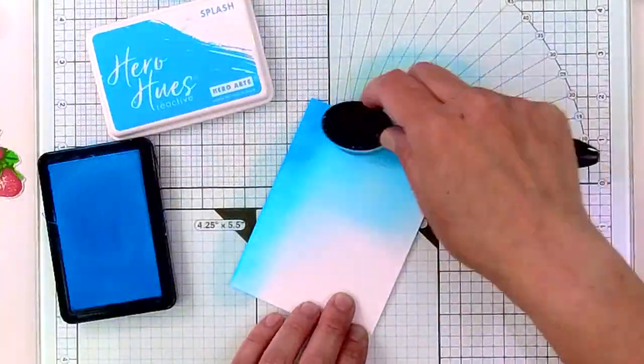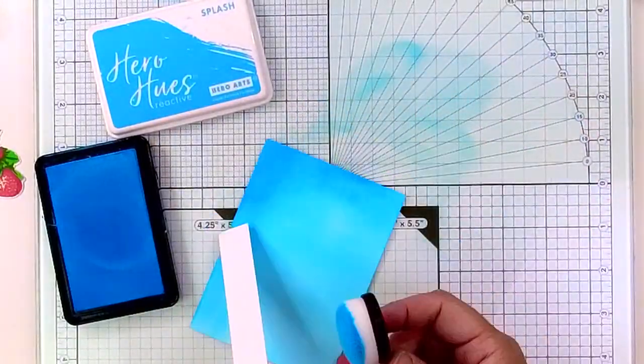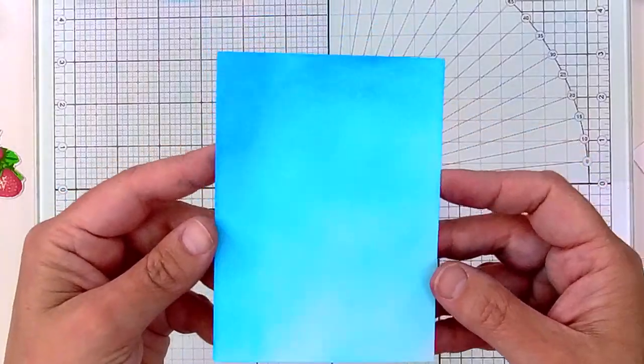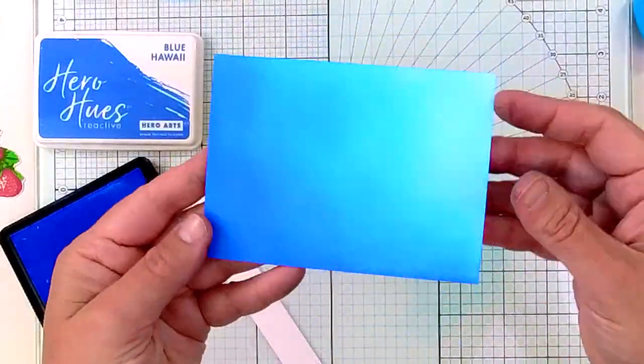I decided I'd go with a blue background, so I got out my splash reactive ink and added a first layer of color to my background piece, and now I'm going to go in and add some darker shading with blue Hawaii.